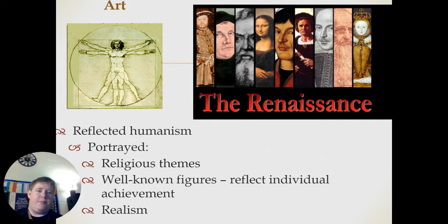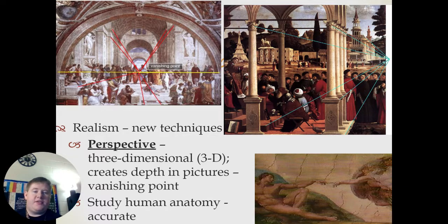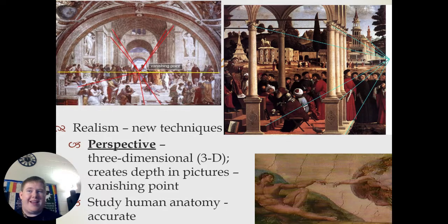Art embraced realism, meaning the people in the paintings looked like real people. A lot of new techniques were being used, including perspective — essentially making paintings three-dimensional — and creating depth in pictures with vanishing points. As you can see with these lines, this is the vanishing point of this painting, and in the School of Athens, the vanishing point is right here on the horizon. We also see a study of human anatomy, meaning the people being portrayed in the art look anatomically correct.